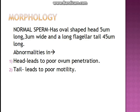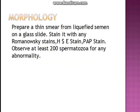Regarding morphology: a normal sperm has an oval head and a long flagellar tail. Abnormalities can be either in the head or in the tail. If the defect is in the head it will lead to poor ovum penetration, and if it is in the tail it will lead to poor motility.